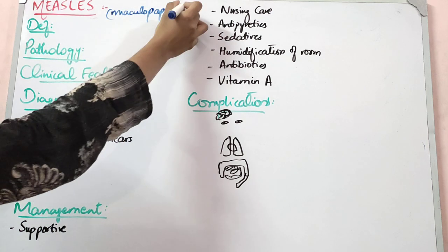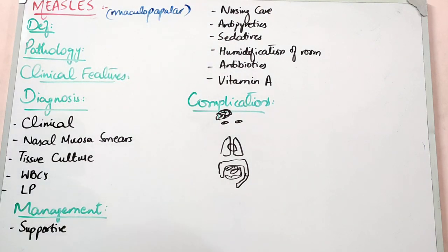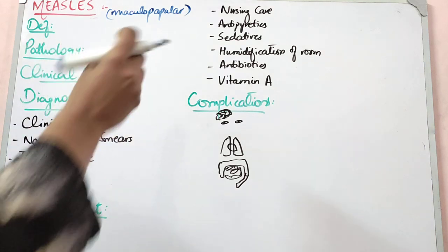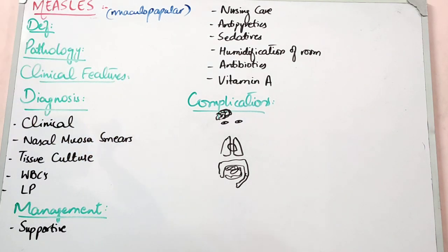Measles has a maculopapular rash — it is reddish and erythematous. Compare this to chicken pox, which has vesicular eruptions with fluid-filled areas. Measles is not fluid-filled; it is redness with raised areas. This distinction is important for your MCQ.